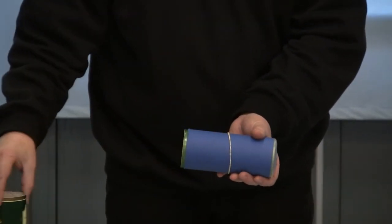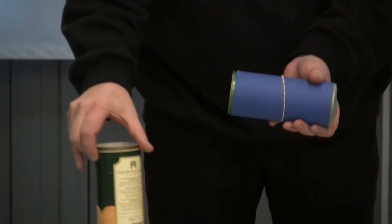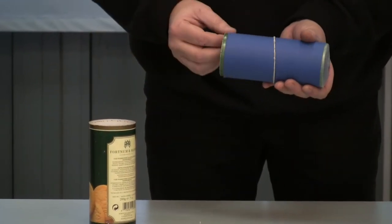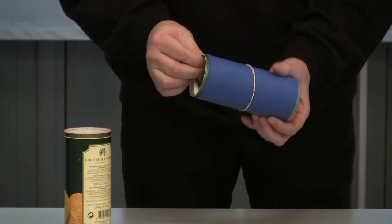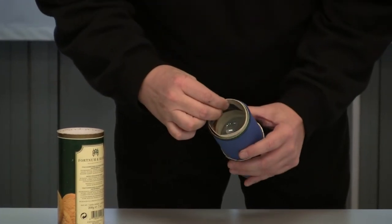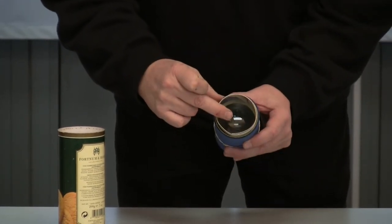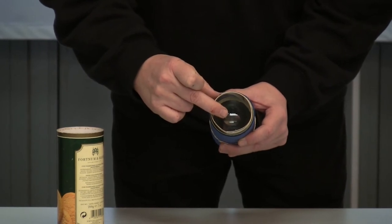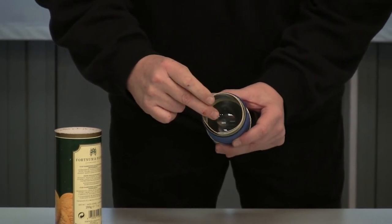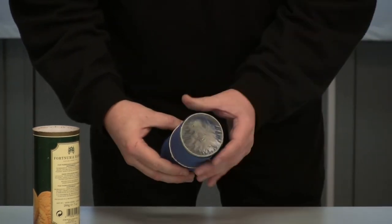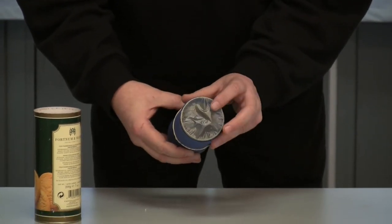It has been made from a biscuit tin. It consists of one end a magnifying glass lens, cheaper the better, and at the other end a sandwich bag.